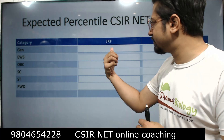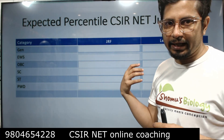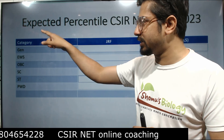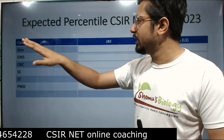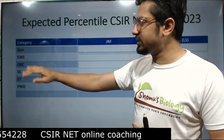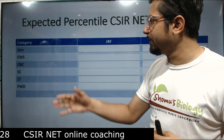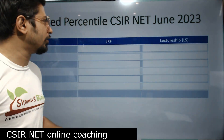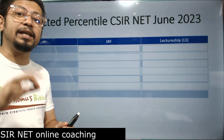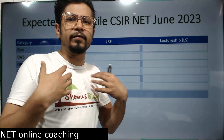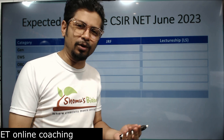In this table, we have category and we have GRF and LS. Starting from General or Unreserved, then EWS, OBC, SC, ST, and PWD category — for all these categories we'll discuss the cutoff for GRF as well as LS in percentile score. Remember, I always prefer percentage score, but CSIR or NTA generally declares it in percentile, so let's go with that.